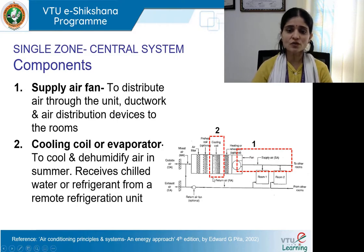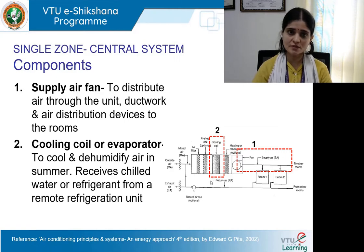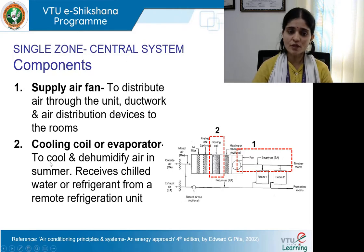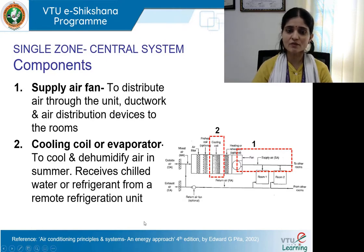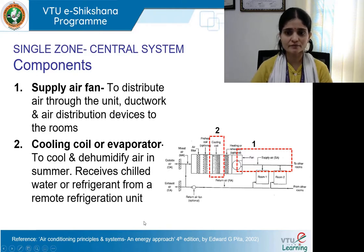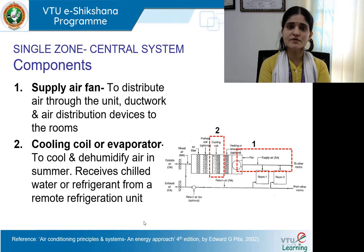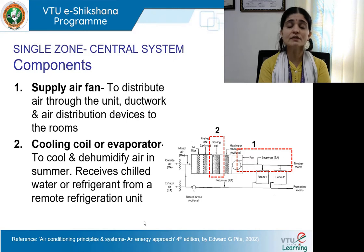Number two: the cooling coil or evaporator — both terms are used synonymously. It is used to cool and dehumidify the air in summer time. It receives chilled water or refrigerant from a remote refrigeration unit. The cooling coil is at the interface between the unit and the room to be cooled, and hot air first enters the evaporator where all the processes initiate.